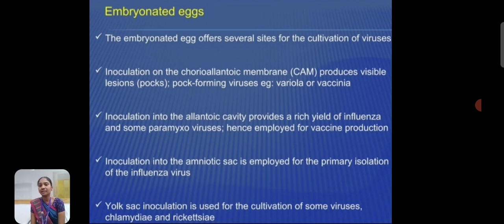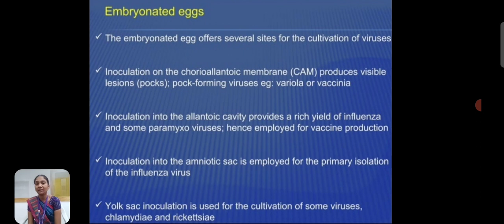Embryonated egg. The embryonated egg offers several sites for the cultivation of viruses. Inoculation on the chorioallantoic membrane produces visible lesions for variola and vaccinia. Inoculation into the allantoic cavity provides a rich yield of influenza and some paramyxovirus, hence employed for vaccine production. Inoculation into the amniotic sac is employed for the primary isolation of influenza virus.